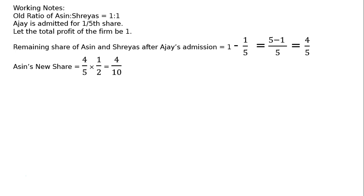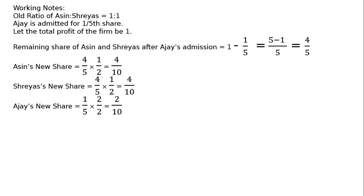4/5 is the share available for Ashin and Shreyas. Hence, Ashin's individual new share is equal to 4/5 multiplied by 1/2, and similarly for Shreyas — that is 4/10 new share for both Ashin and Shreyas. Ajay's new share will be 1/5 multiplied by 2/2, that is 2/10. Therefore, the new ratio of Ashin, Shreyas, and Ajay is 4:4:2, which simplifies to 2:2:1.